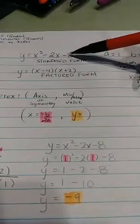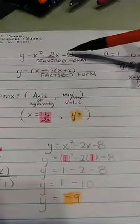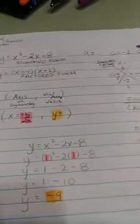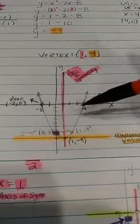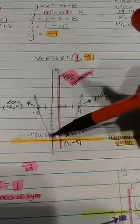Remember the c value is always the y-intercept. So you will see the parabola, and let me show you what that looks like. Here we go. The parabola will cross the y-axis at negative 8 as it has done right here.